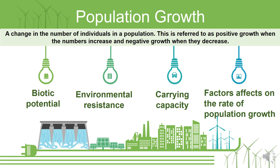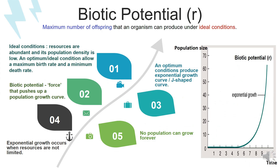The definition of population growth itself is a change in the number of individuals in a population. It can be referred to as positive growth when numbers are increasing and negative growth when numbers are decreasing. There are three terms we will look at: biotic potential, environmental resistance, and carrying capacity — together with the factors that affect the rate of population growth.